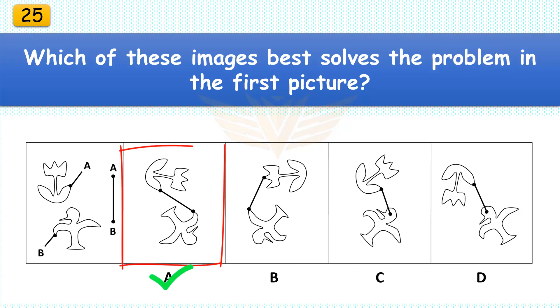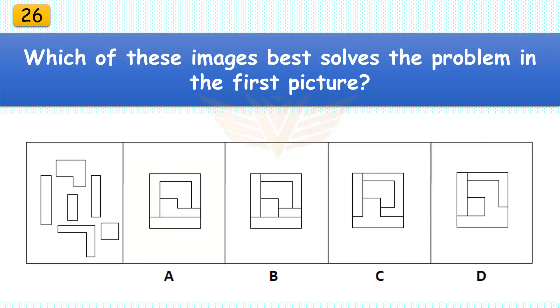Which of these images best solves the problem in the first picture? The correct answer is A. Rotate the tulip greater than 90 degrees and then rotate the dove 135 degrees.